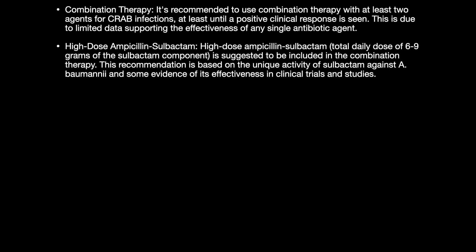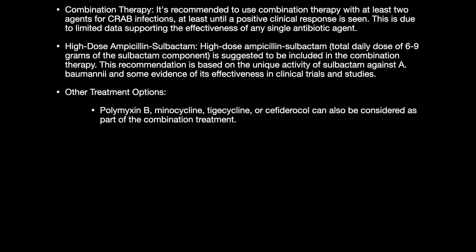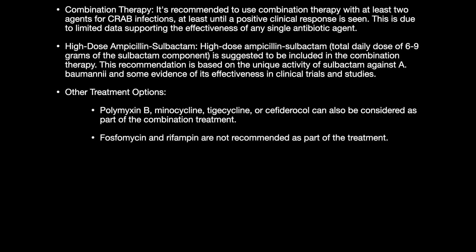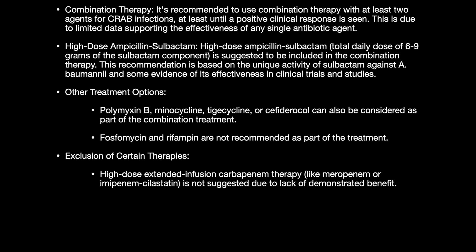In summary, the general approach recommends combination therapy with at least two agents until a positive clinical response is seen, given limited data supporting any single agent. The most important agent is high-dose ampicillin-sulbactam with the sulbactam dose at six to nine grams per day, suggested to be included in all combinations based on its unique activity against Acinetobacter baumannii. Other options — polymyxin, minocycline, and cefiderocol — may be added as part of treatment. Fosfomycin and rifamycins are not recommended. Therapies that are excluded include high-dose extended infusion carbapenems and nebulized antibiotics. Thank you for your patience.